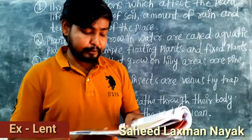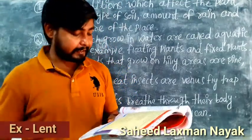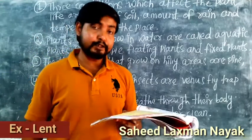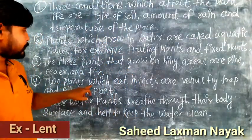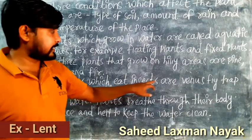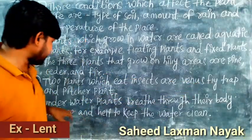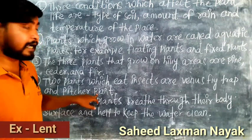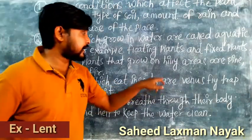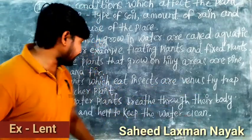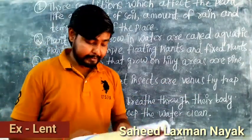Fourth question: give names of two plants which eat insects. The answer is: two plants which eat insects are Venus flytrap and pitcher plant.